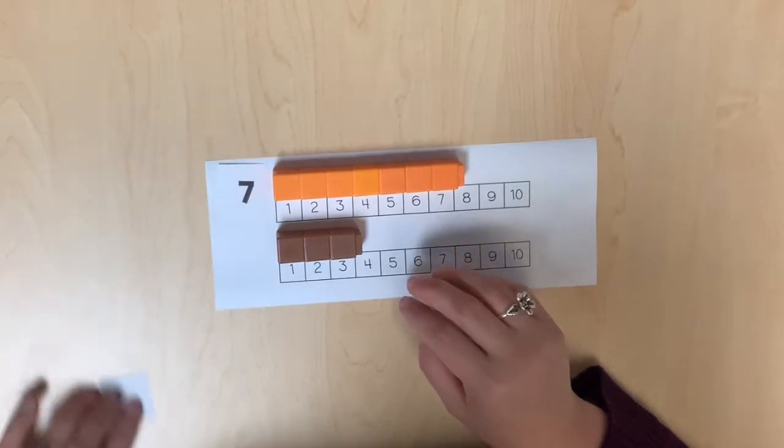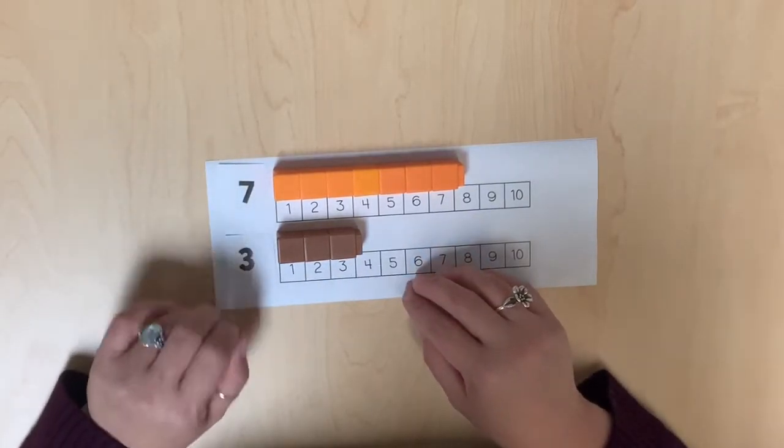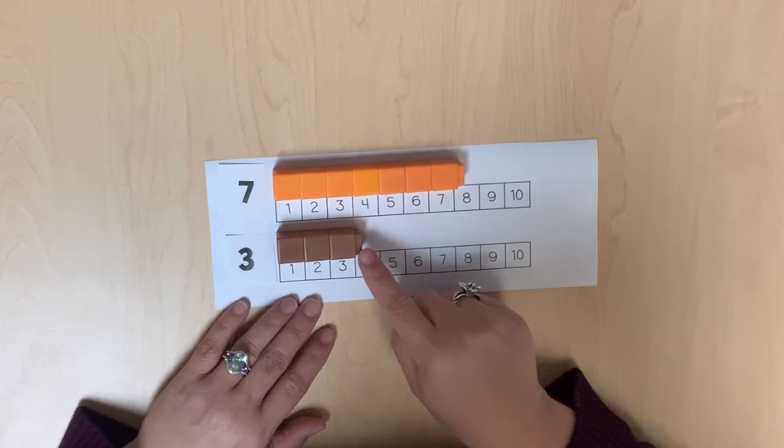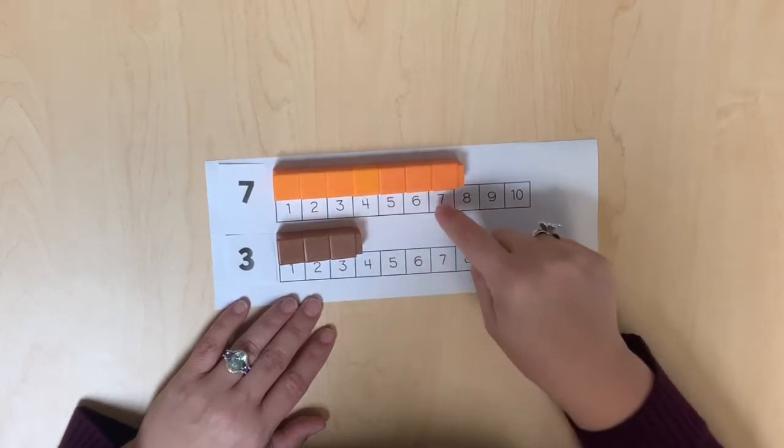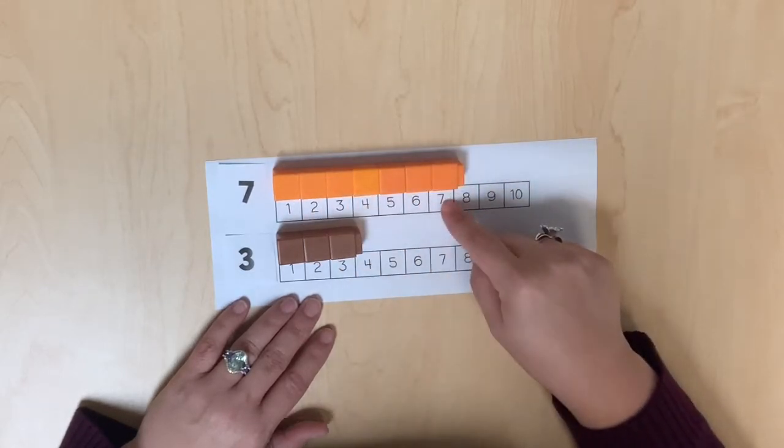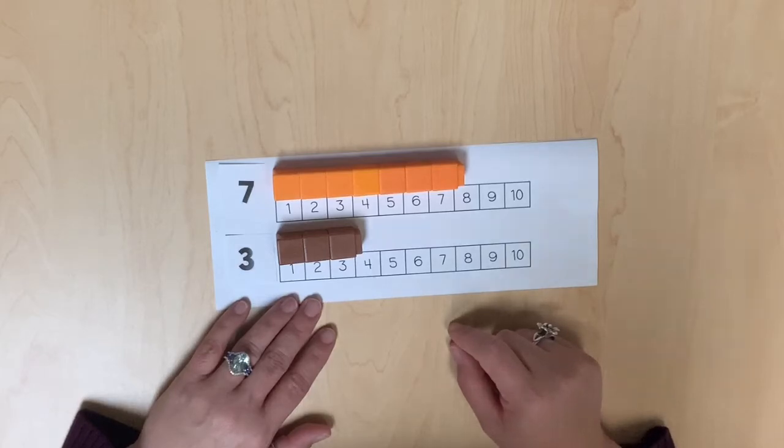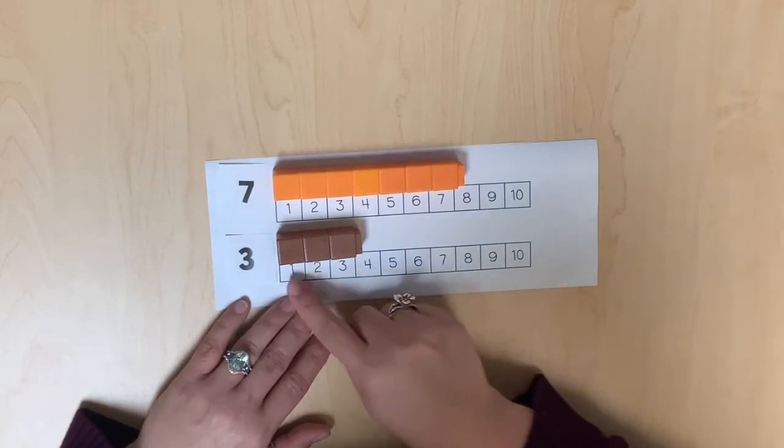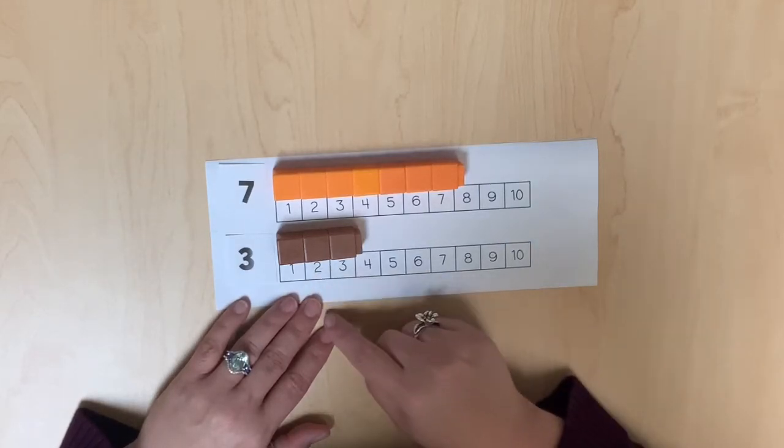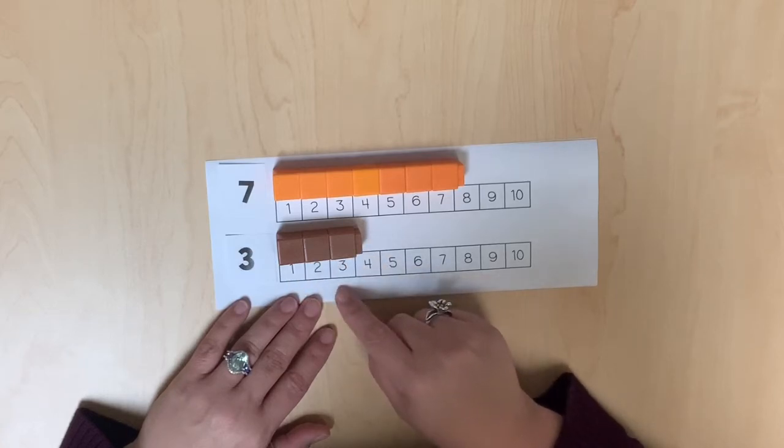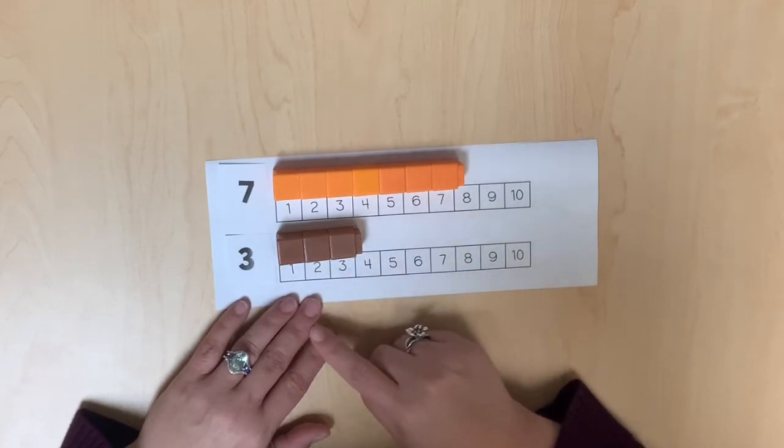We can use the number paths to see that seven is more than three because there are more linking cubes and we counted more spaces on the number path. Three is less than seven because there are fewer linking cubes and fewer spaces were counted on the number path.